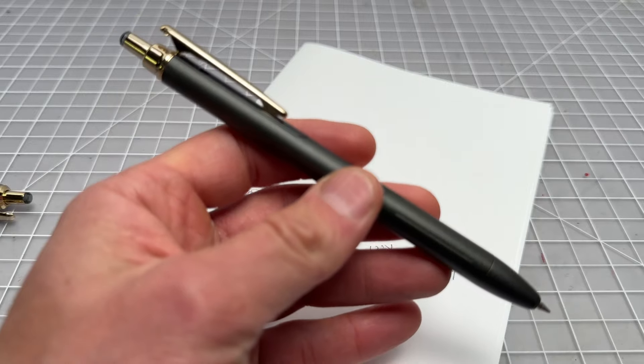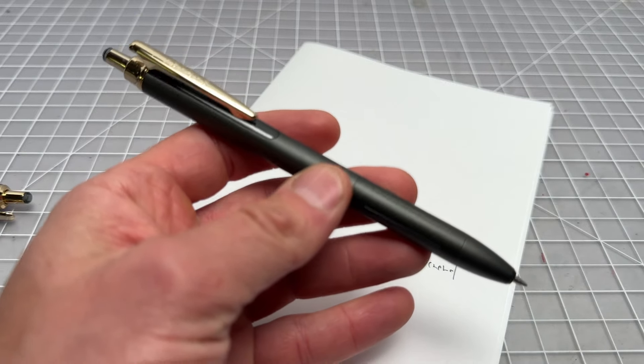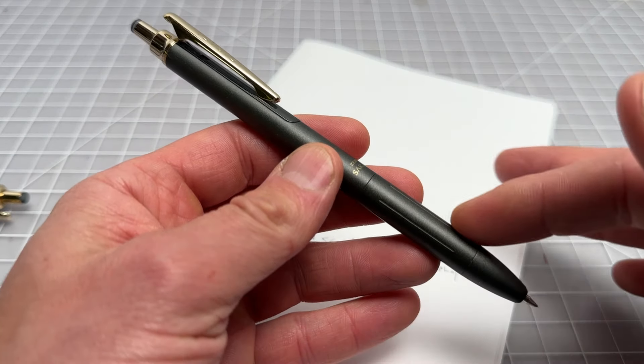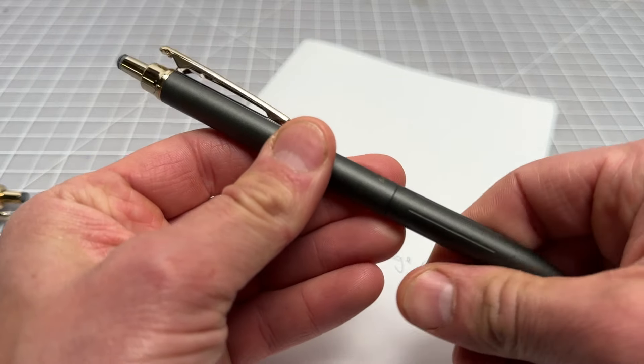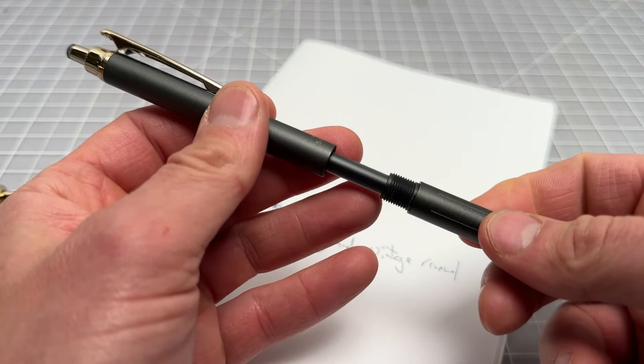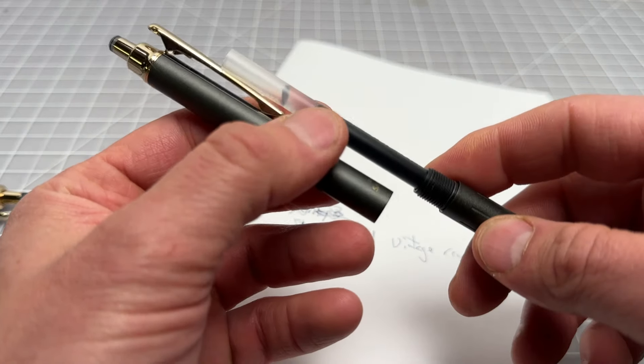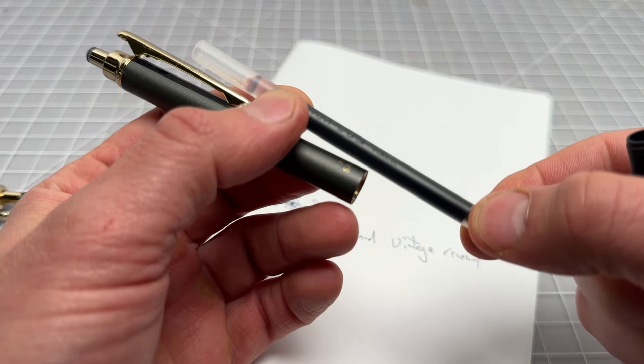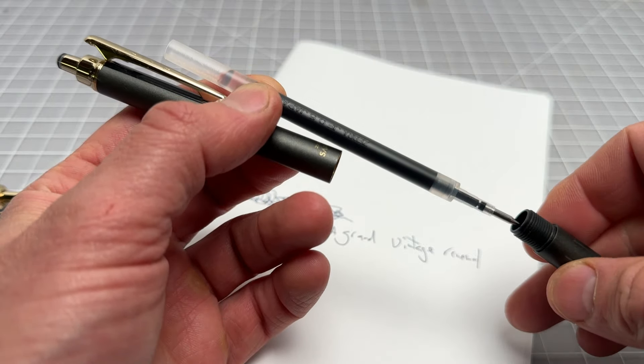This one is that charcoal gray, I forget the exact color scheme. All metal barrel twists apart. You can see it has some plastic on the inside. Uses Zebra's very standard JF 0.5 millimeter refill.